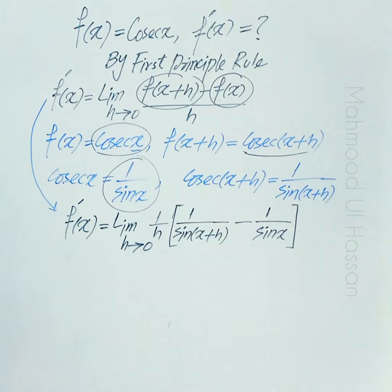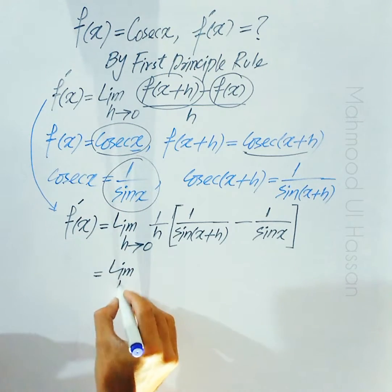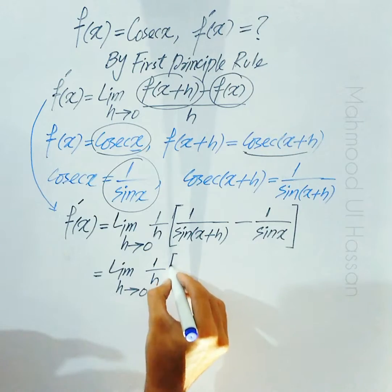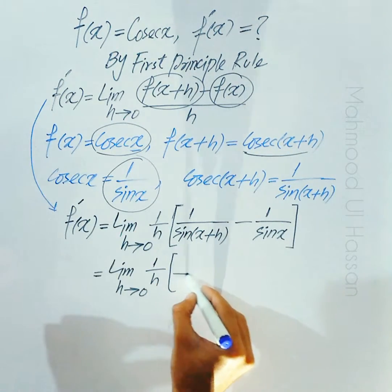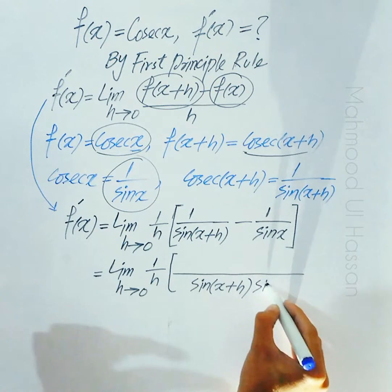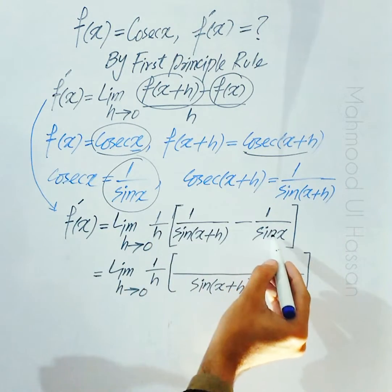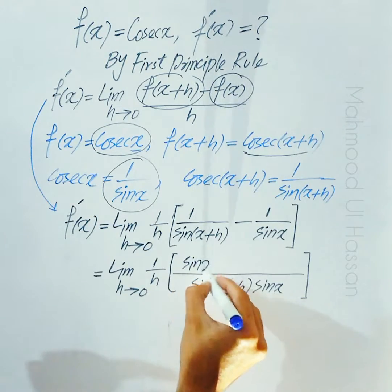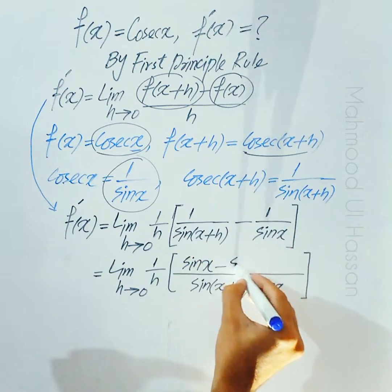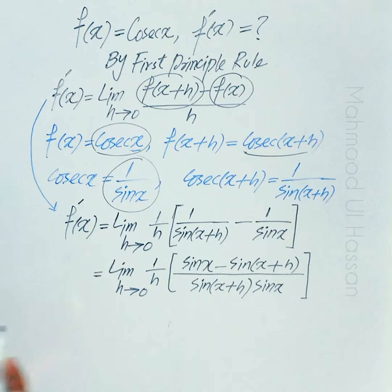اس کو simplify کرتے ہیں by taking the LCM of the denominators. دونوں کا LCM ان کا product آئے گا: sine(x+h) × sine(x)۔ Numerator میں cross multiply ہوگا — sine(x) minus sine(x+h)، کیونکہ یہ دونوں co-prime ہیں تو ان کا LCM صرف product ہے۔